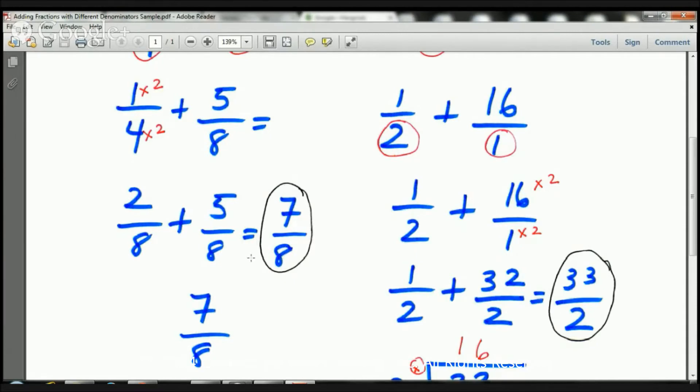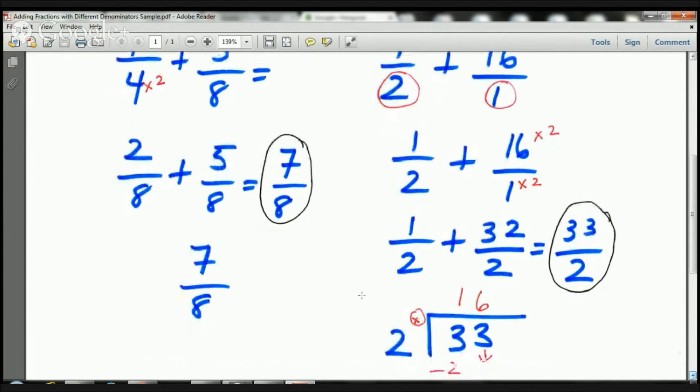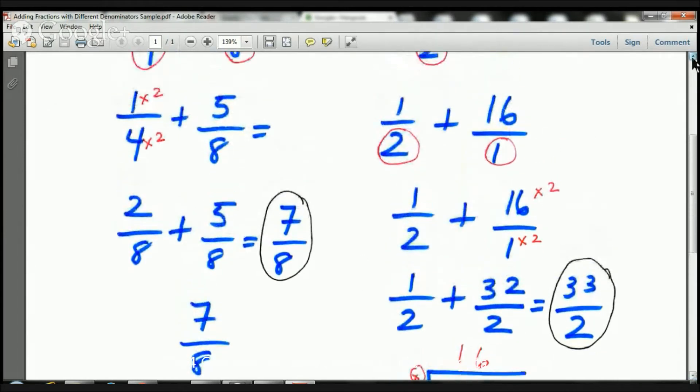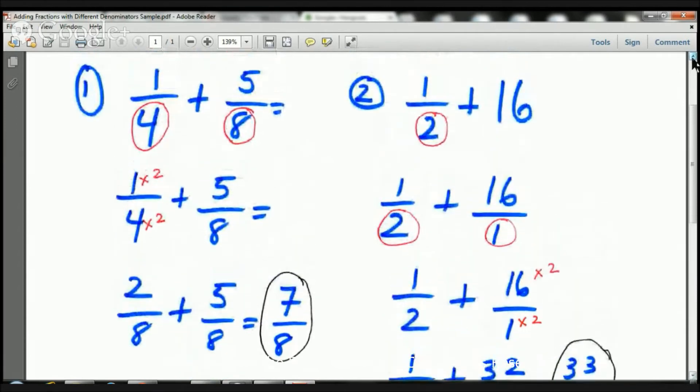And the reason I have this circled is because we always have to see, is there a way that we can reduce this number? And there isn't. So, the answer is going to be 7/8, and that's it. Now, let's take a look at the next example.